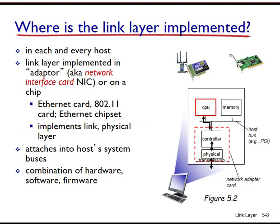Figure 5.2 shows a typical host architecture. For the most part, the link layer is implemented in a network adapter, also known as a network interface card, or NIC. At the heart of the network adapter is the link layer controller, usually a single special-purpose chip that implements many of the link layer services, such as framing, link access, error detection, and so on. Therefore, much of the link layer controller's functionality is implemented in hardware. Until the late 1990s, most network adapters were physically separate cards, such as a PCMCIA card or a plug-in card fitting into the PC's PCI card slot. But increasingly, network adapters are being integrated onto the host motherboard — the so-called LAN on motherboard configuration.